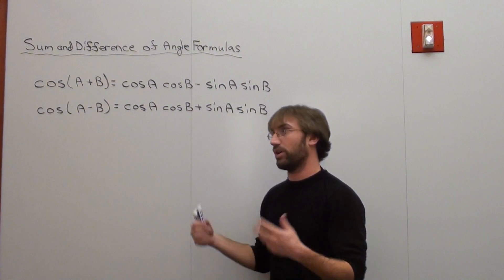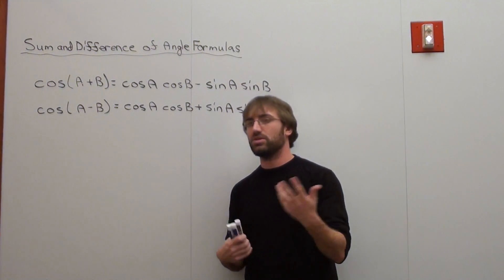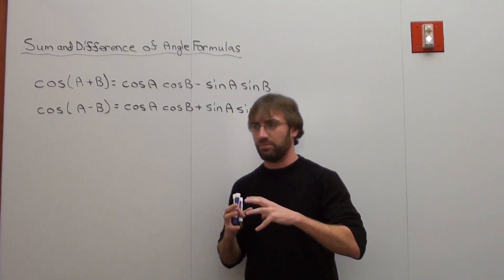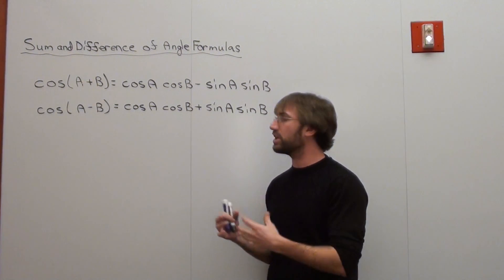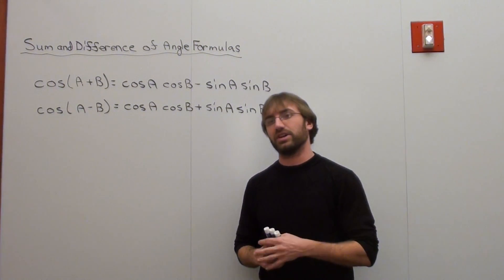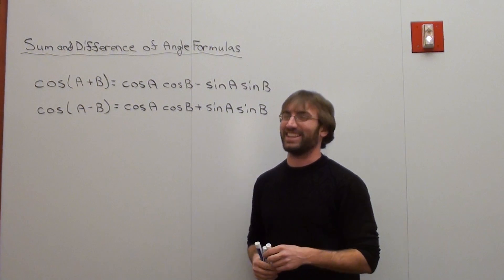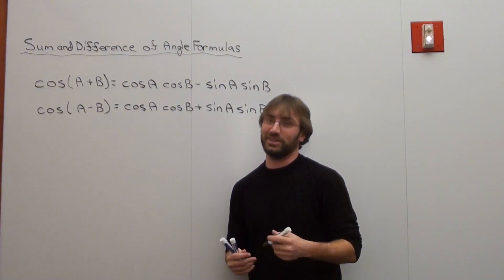Now the next thing that students ask is where do we use this because this formula annoys me already. And I say well you can use it in two kinds of cases. You can use it in a more concrete example or you can use it in an abstract case, which is really cool. I think the abstract case is very cool. And you can actually use that for trig identities. My students don't really like that but what are you going to do?